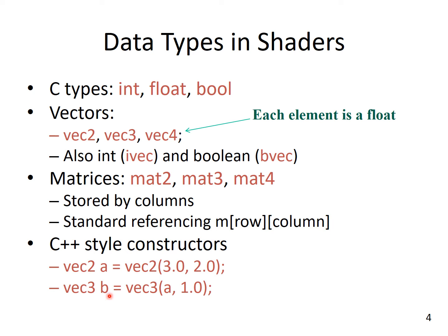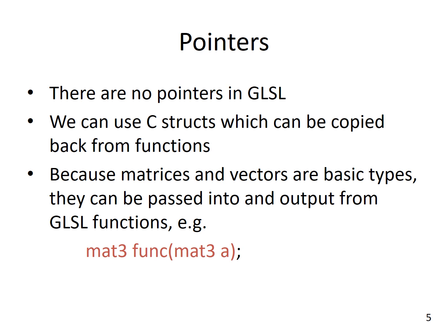These are standard C++ style constructors. When discussing C-like programming, the topic of pointers always comes up — however, there are no pointers in GLSL. We can use C structs, which can be copied back from functions, but there are no pointers as such. Because matrices and vectors are basic types, they can be passed into and out of GLSL functions, such as mat3 func(mat3 a), where we pass a matrix as a parameter and the function returns a mat3.